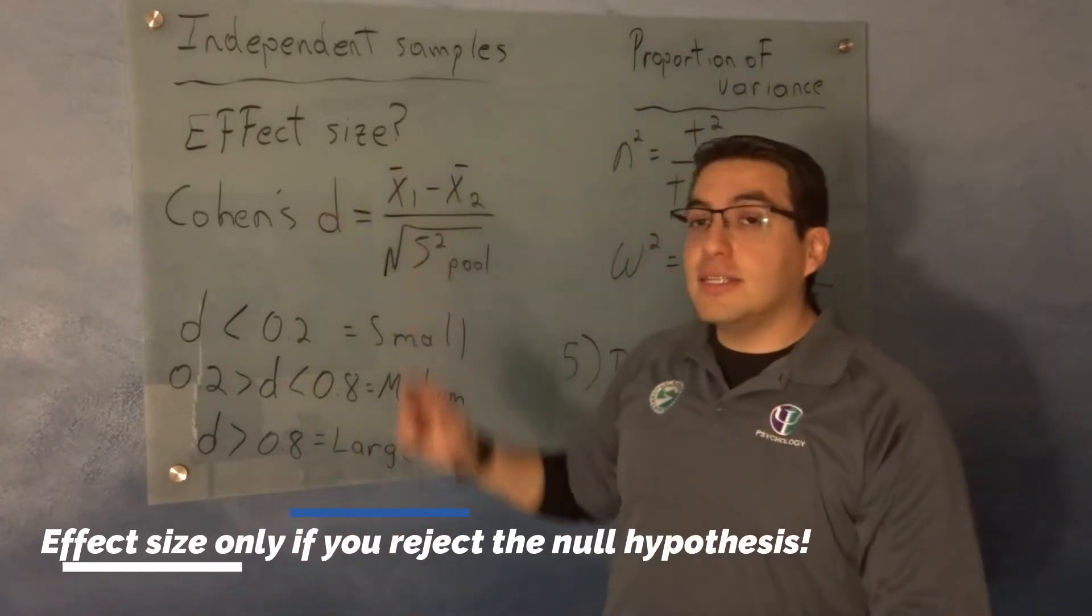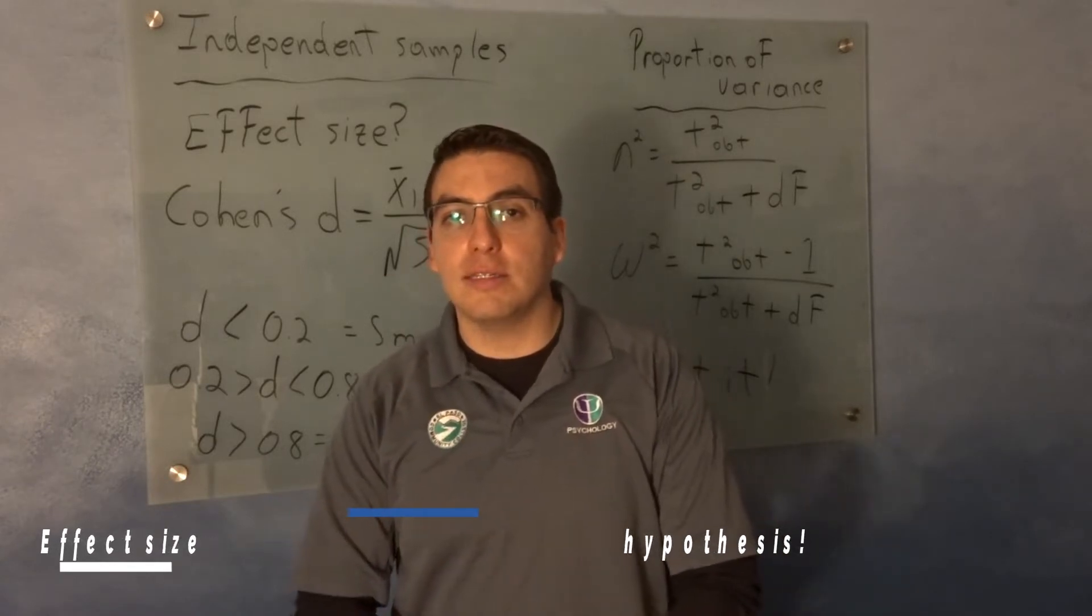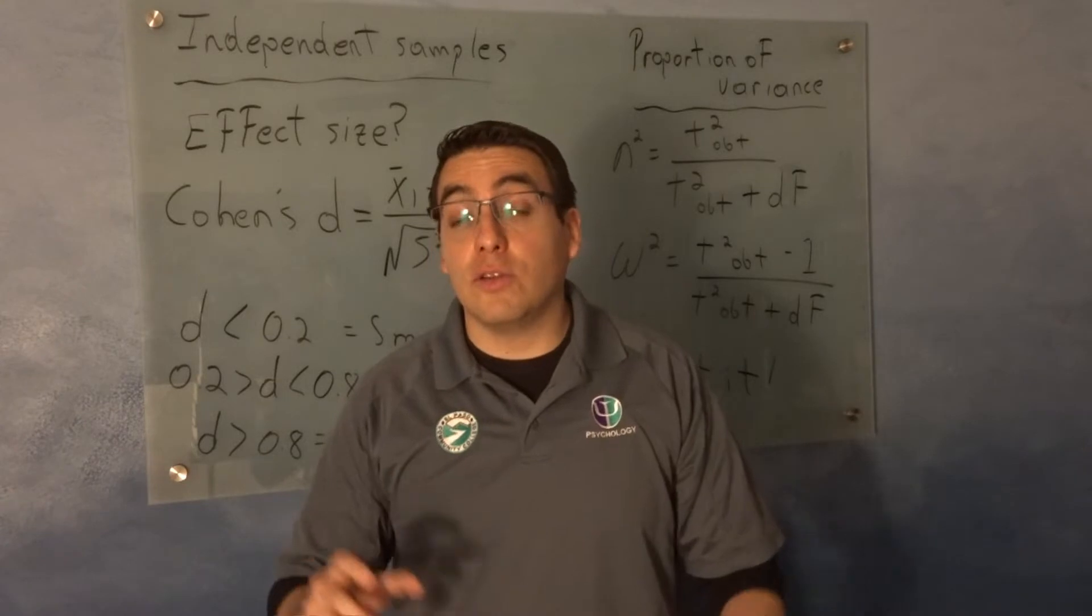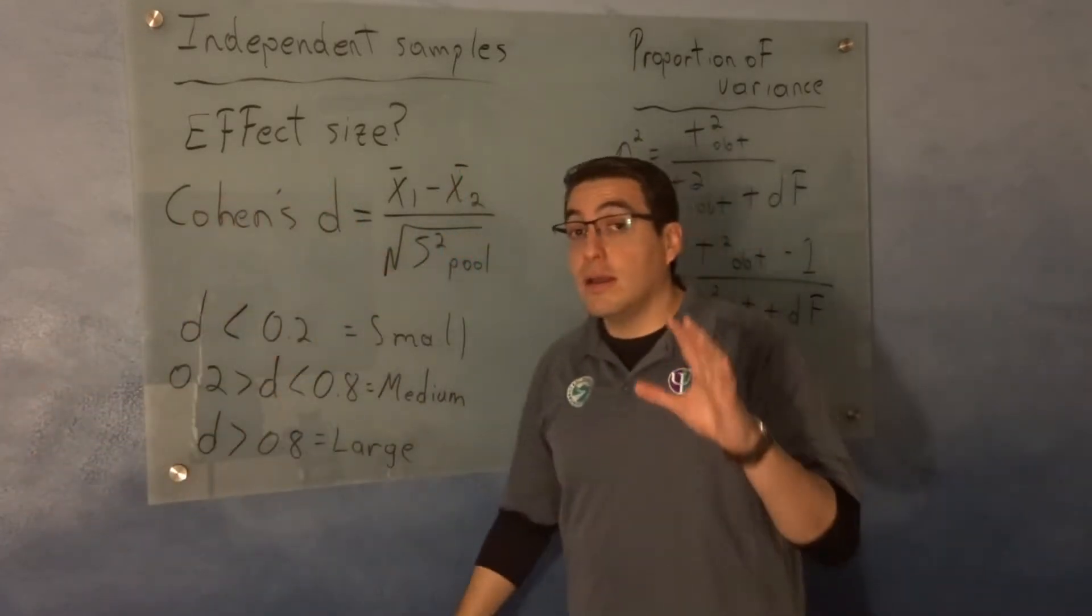So effect size is only computed if you rejected the null hypothesis. If you did that, it means that you found an effect, so now you're going to say how big is your effect. This is when you take on this.